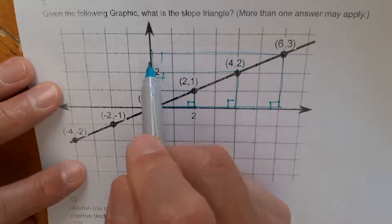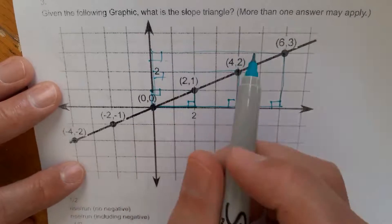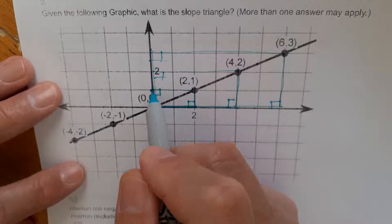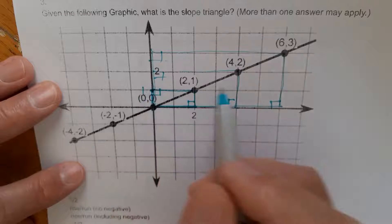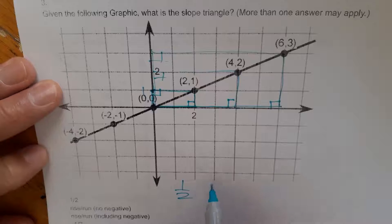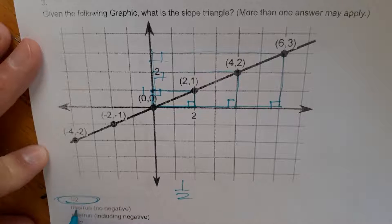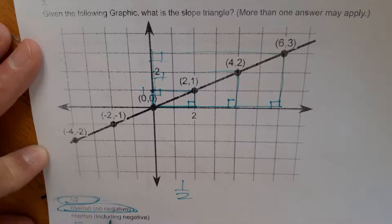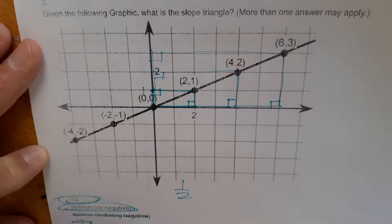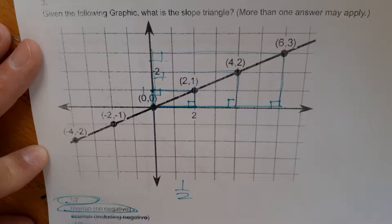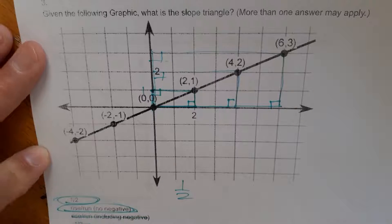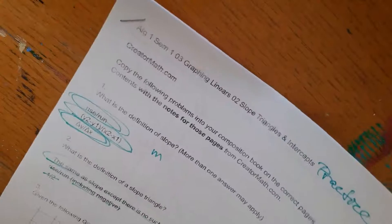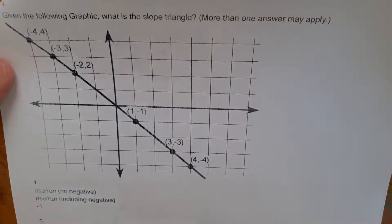Well, we want to do rise over run for our slope triangle too. So we rise one and we run two. So one over two is one half. This is correct. Rise over run, no negative. That's correct. Rise over run, including negative, no. And negative, no. So these two answers look correct to me. One half and rise over run, no negative.